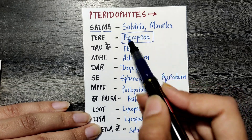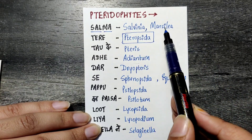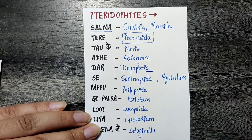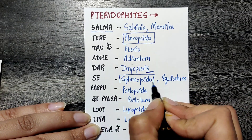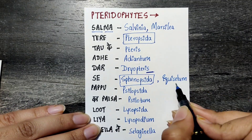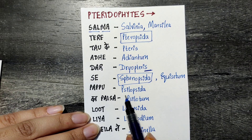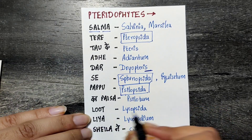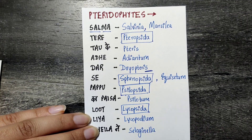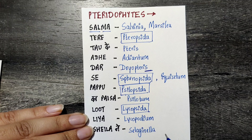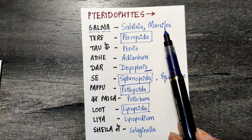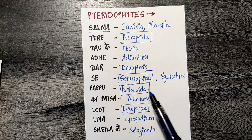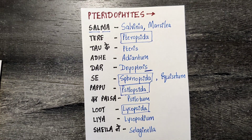Pteropsida also includes Dryopteris from Dar. Then S gives Sphenopsida, which contains only one example: Equisetum. P gives Psilopsida, which also contains only one example: Psilotum. And finally Lycopcida contains Lycopodium and Selaginella. So: Pteropsida has Salvinia, Marsilea, Pteris, Adiantum, and Dryopteris; Sphenopsida has Equisetum; Psilopsida has Psilotum; Lycopcida has Lycopodium and Selaginella.